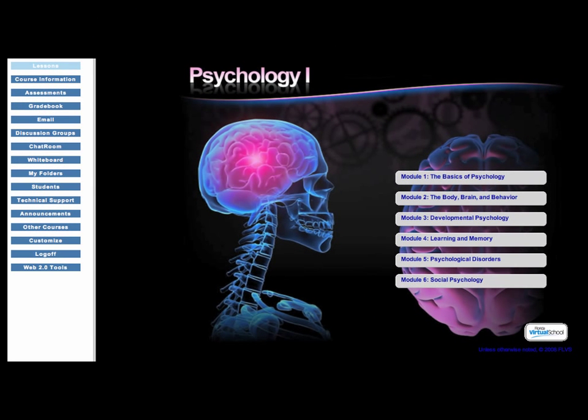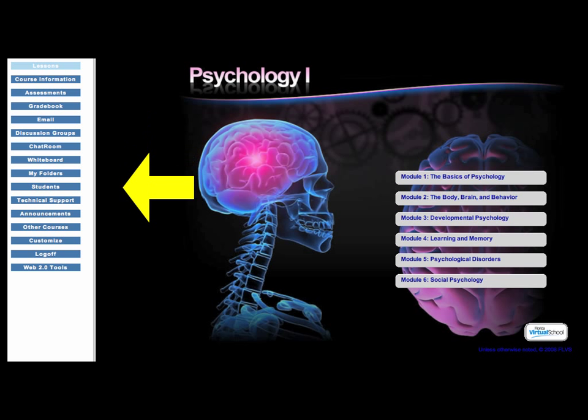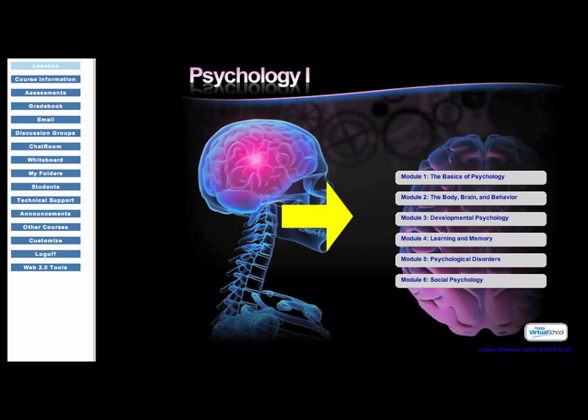When you first log into the course from your dashboard, the homepage is divided into two main areas. The left side of the screen is your toolbar for accessing lessons and assessments, checking your email, and other course information. The right side of the screen includes links to the modules of the course.